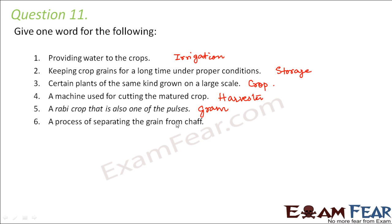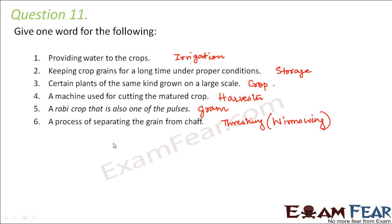A process of separating the grain from chaff — that is called threshing. One such process is winnowing, where grain gets separated from the chaff. So these are the one-word answers for each description, and with this we have reached the end of this lesson on crop production and management.